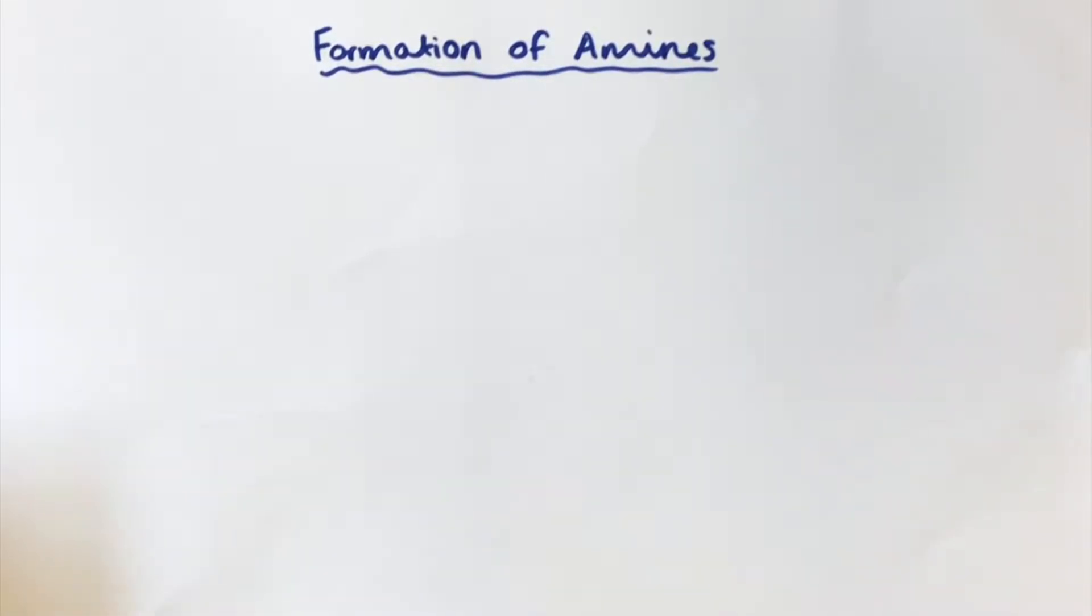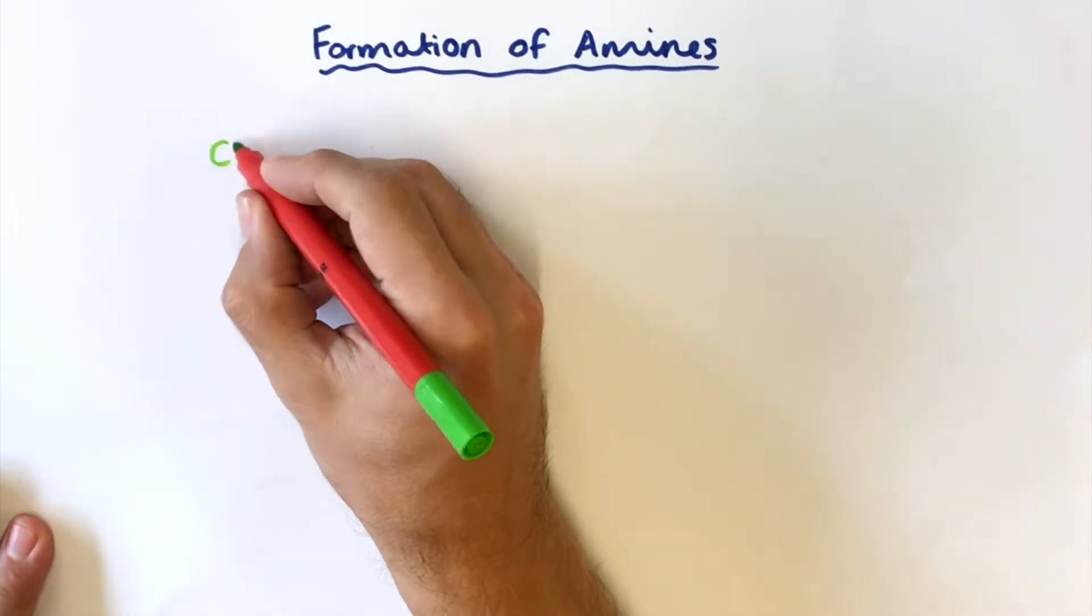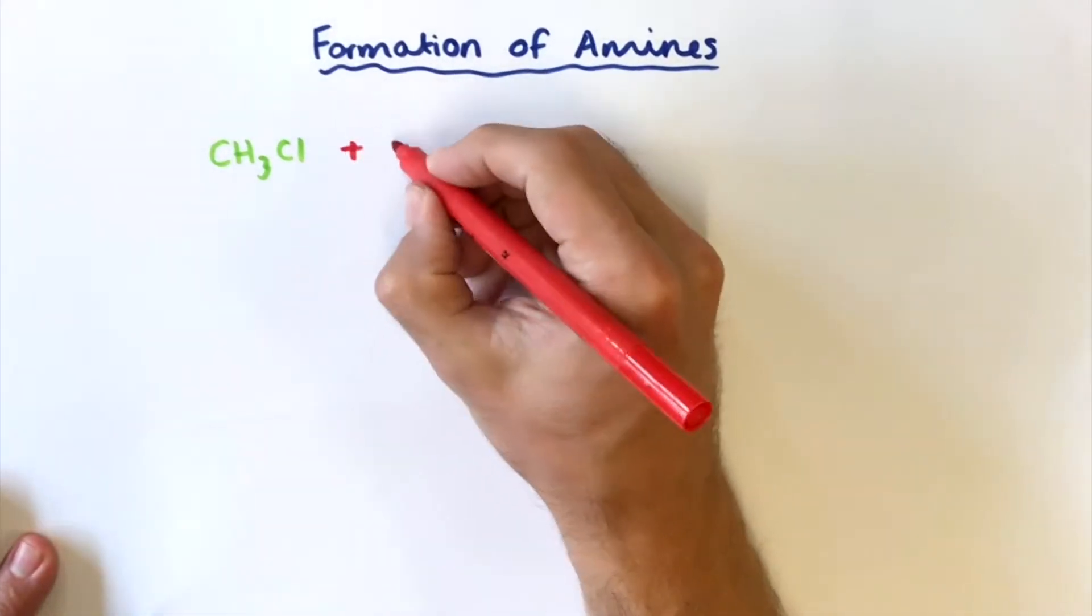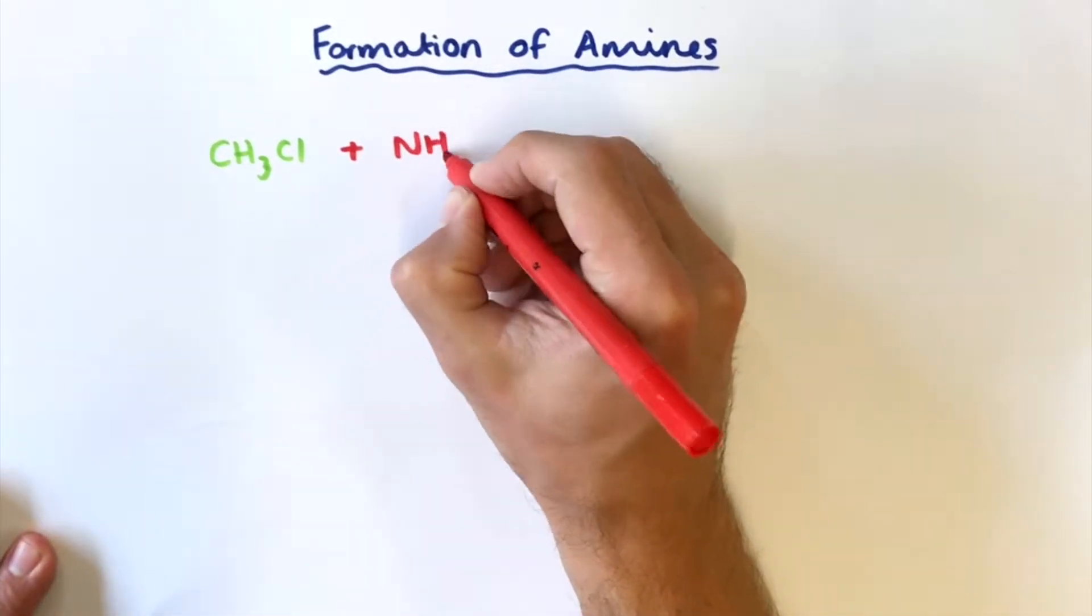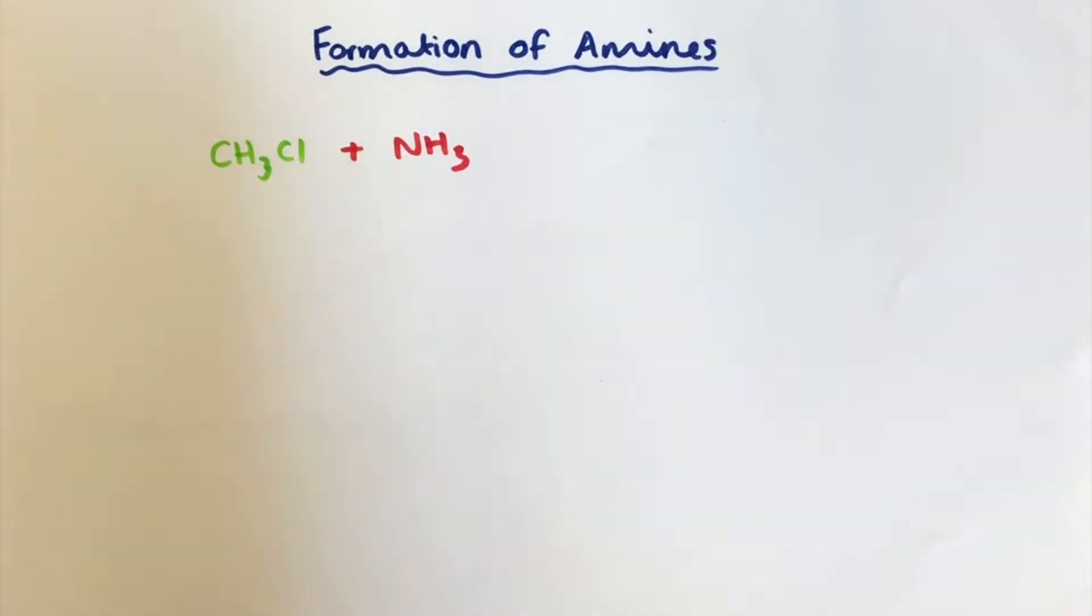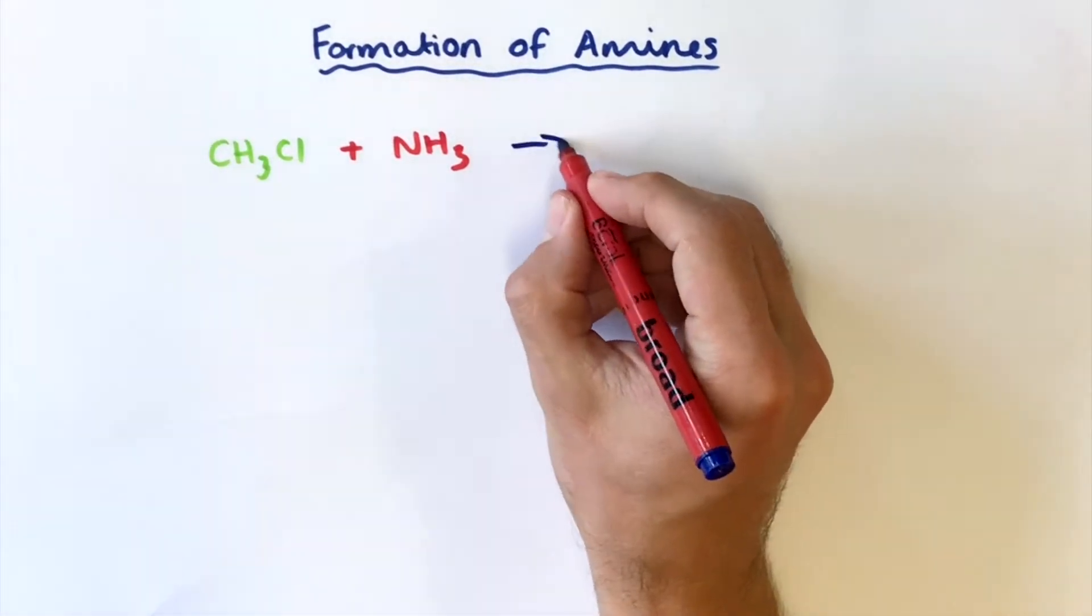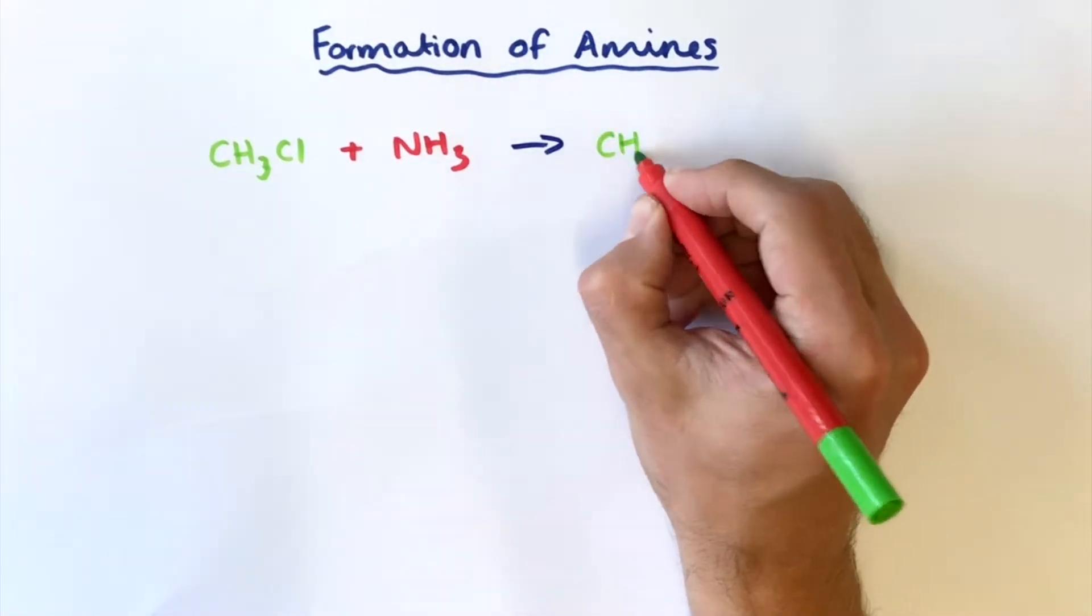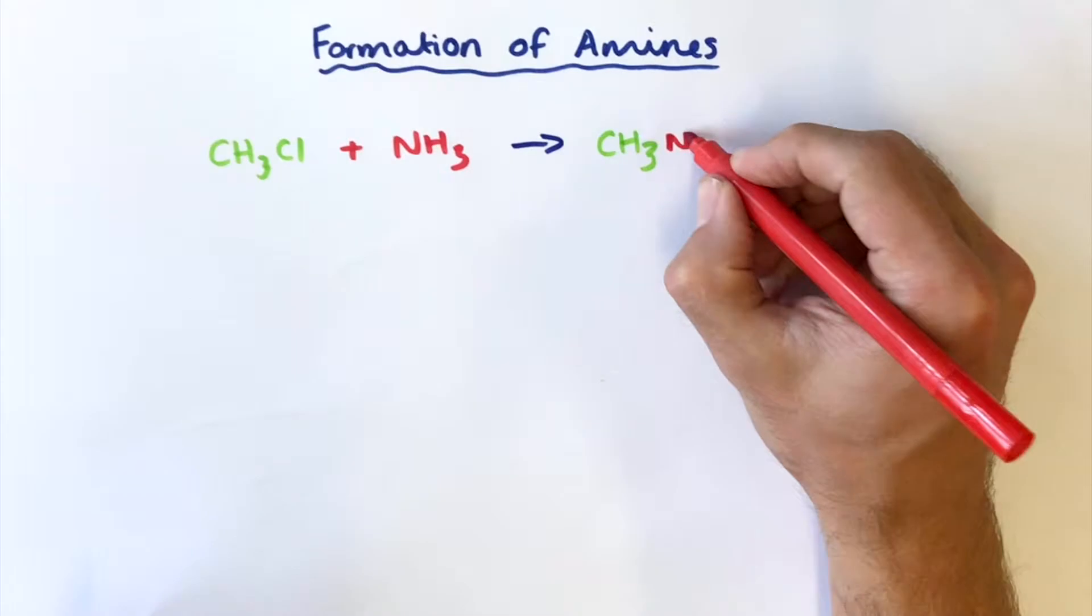The first way is straight from a halo alkane. So first of all we'll start off with CH3Cl. We're going to react it with a molecule of ammonia and for this reaction we'll get nucleophilic substitution and we will make methyl amine as our product.